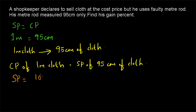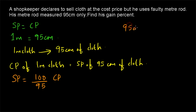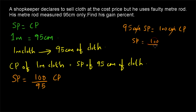Since 1 meter equals 100cm, we can write it as 100/95 to keep both values in the same unit. So: selling price of 95cm = cost price of 100cm. Cancelling out the centimeter units, the selling price is equal to (100/95) × cost price. That is the relationship we have formulated between SP and CP.